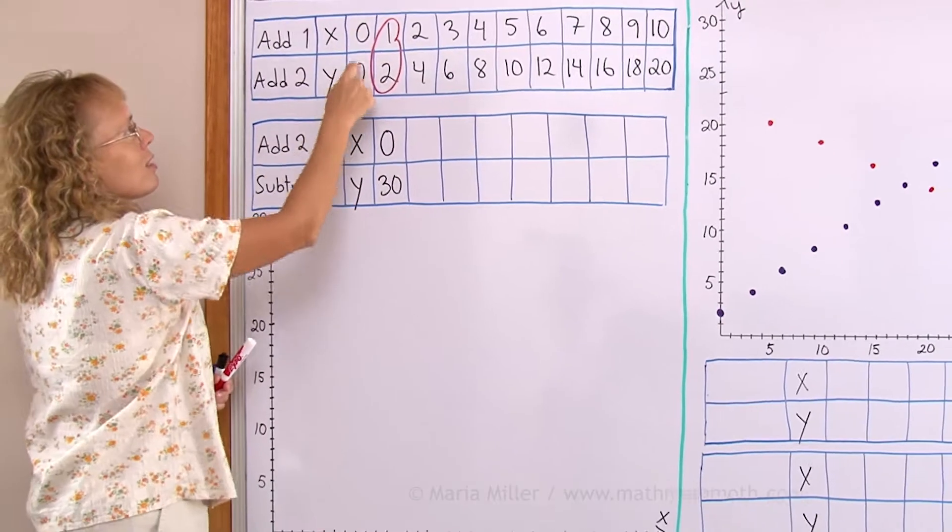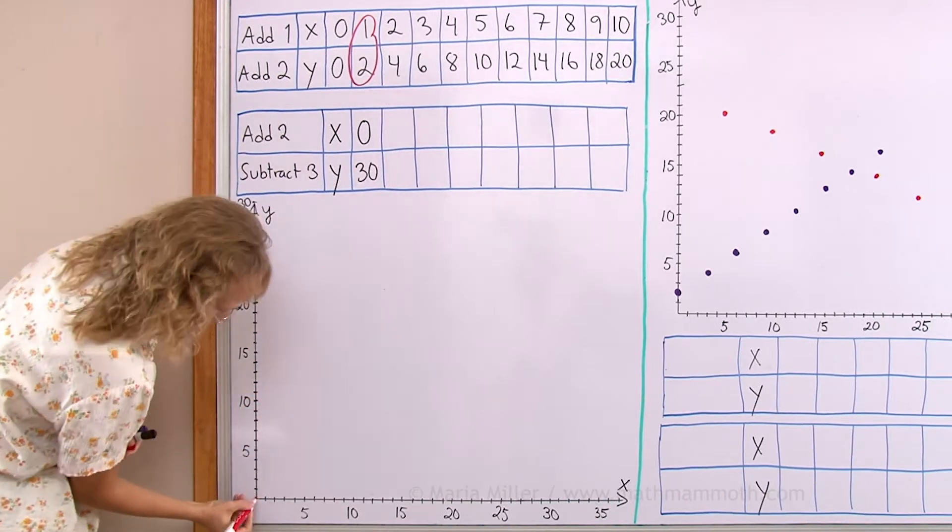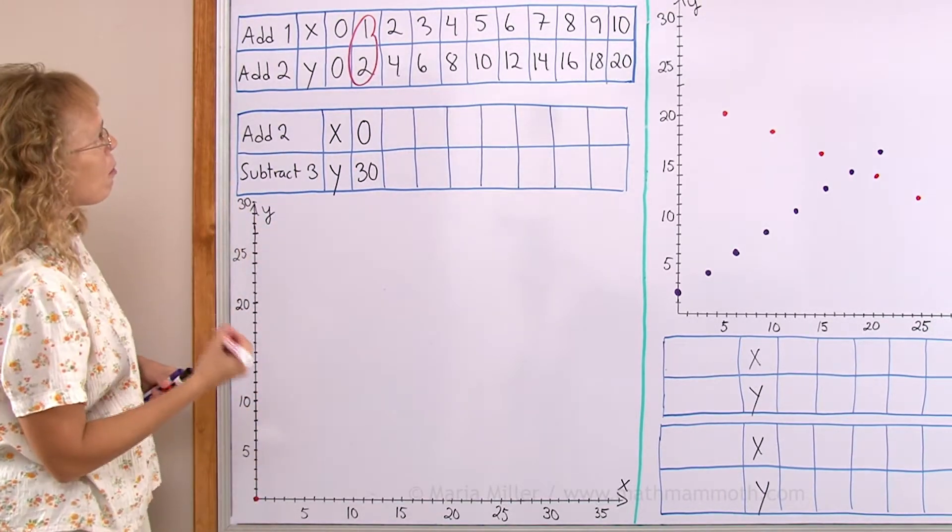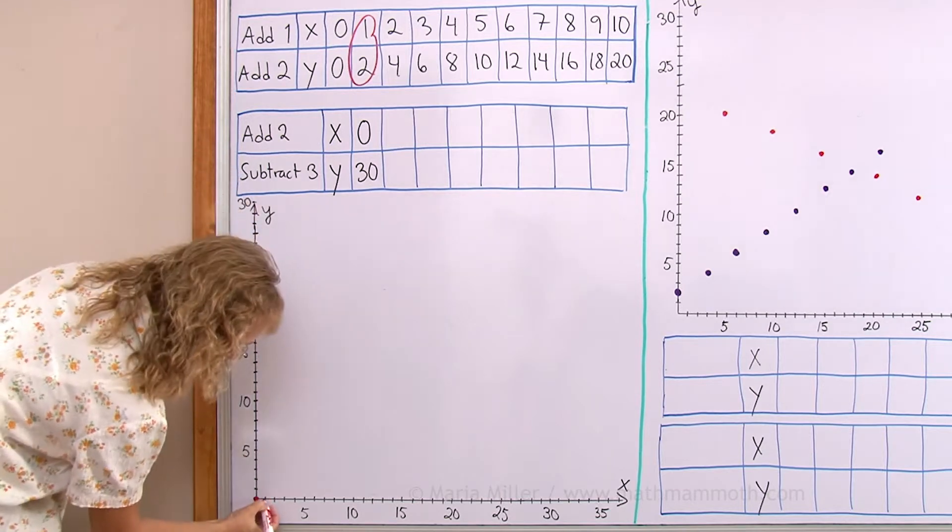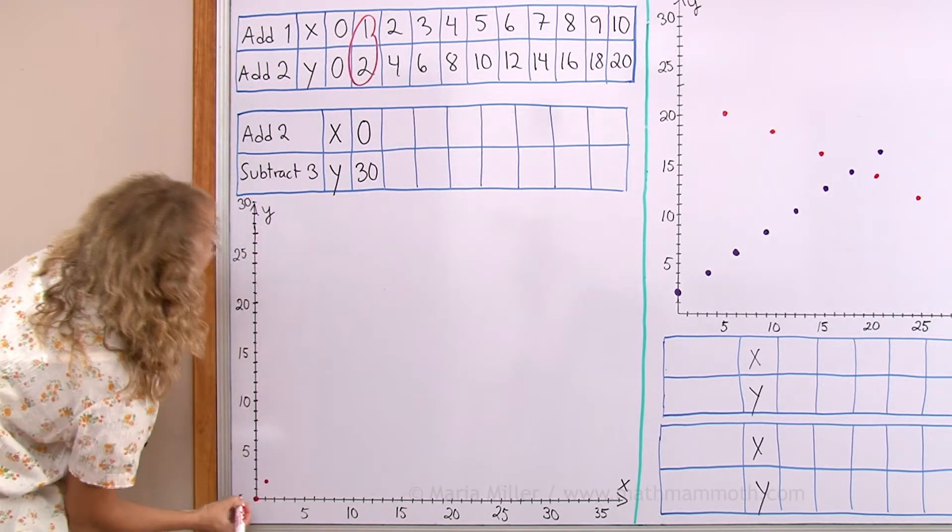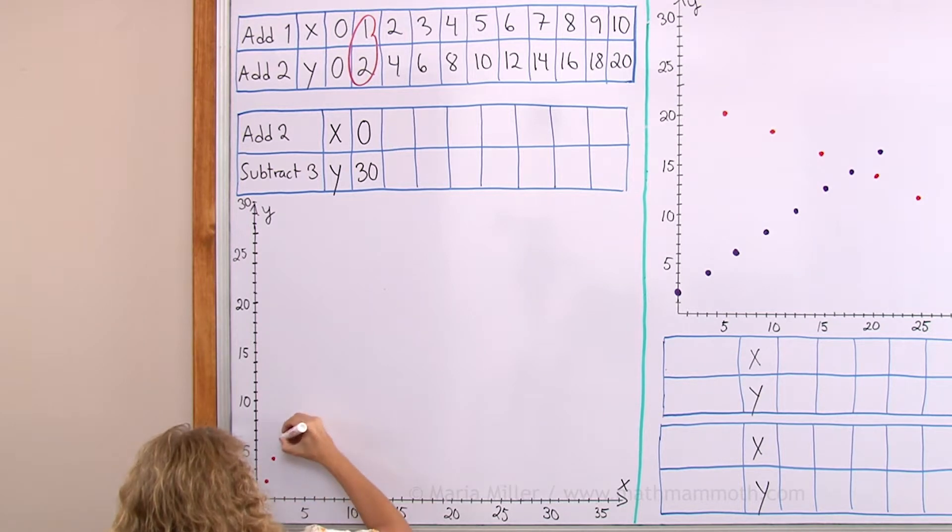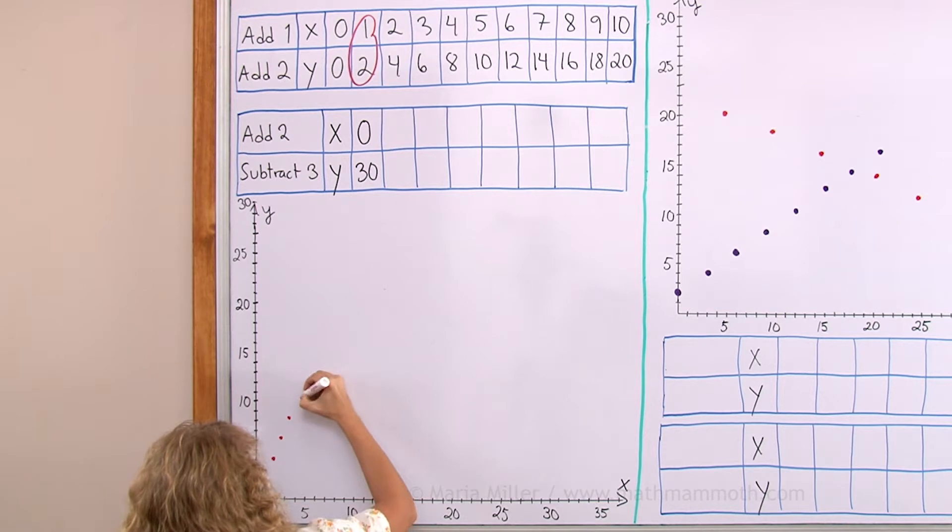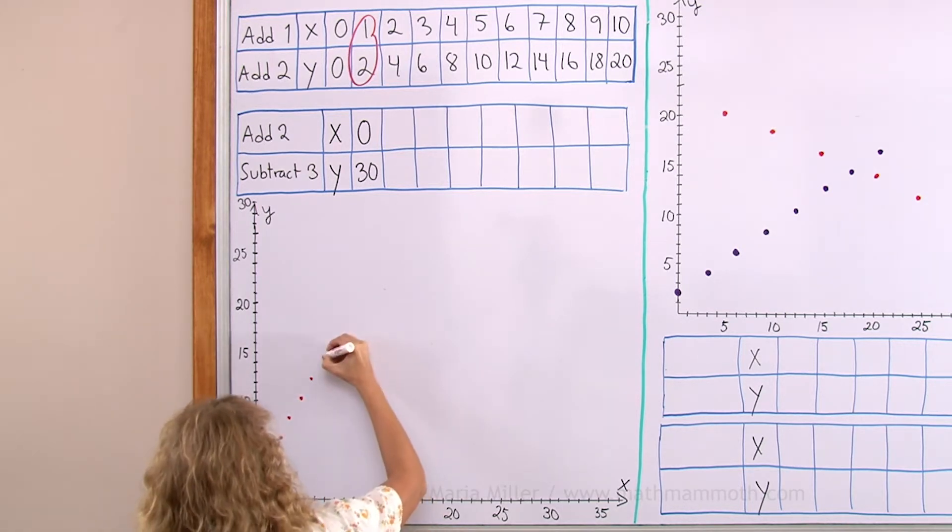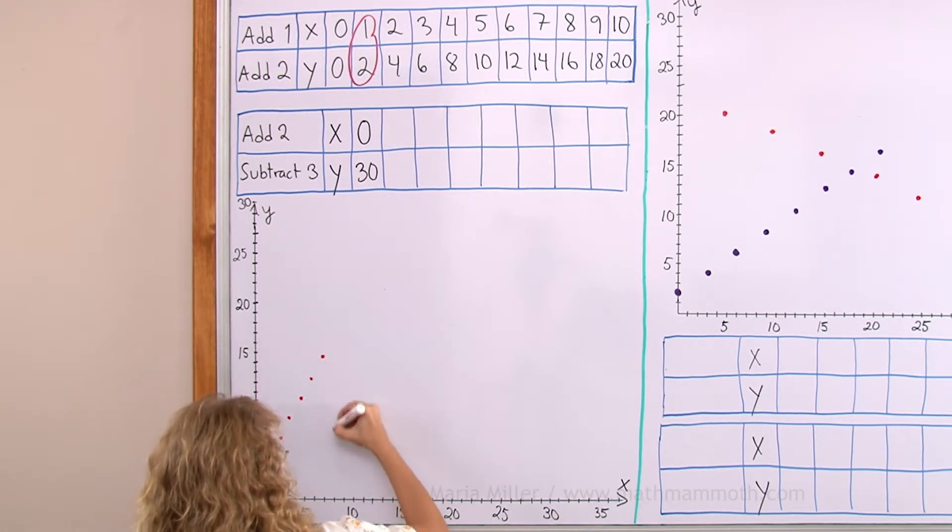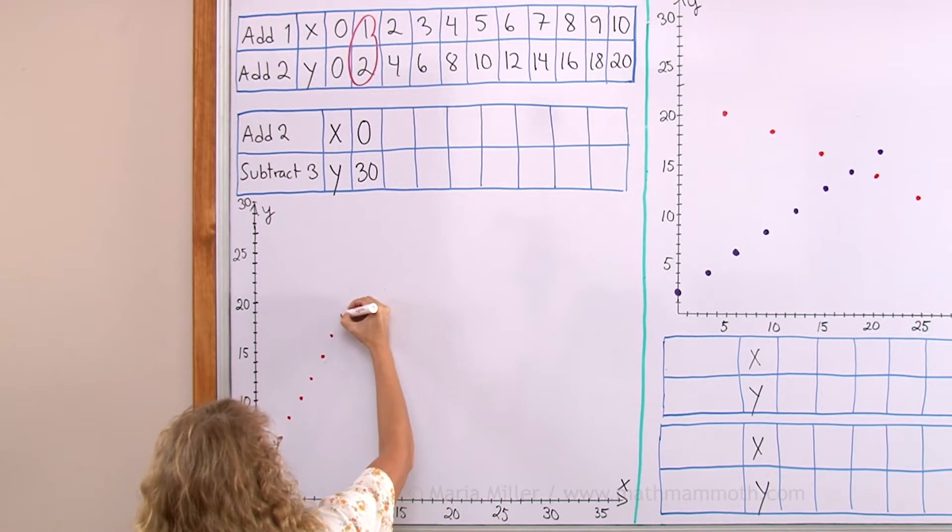Let's plot 0, 0 over here, right there. Then we have 1 and 2 - 1 this way and 2 up. Then 2 and 4, 3 and 6, 4 and 8, 5 and 10, 6 and 12, 7 and 14, 8 and 16, 9 and 18, and then 10 and 20.